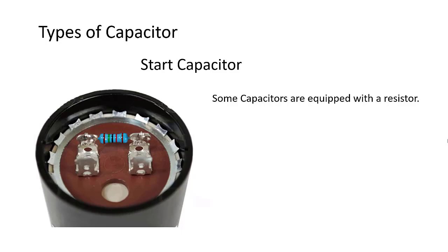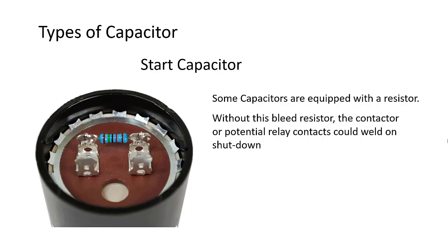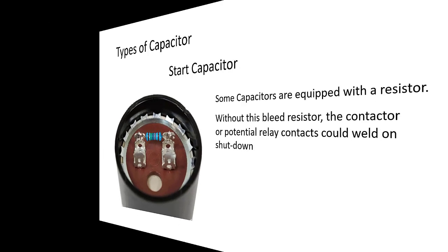Also, start capacitors come with a resistor. Some you can see, like this one, but most often not — it is molded into the cap and you can't see it. This allows the capacitor to bleed down and not weld the contacts in a relay or contactor.